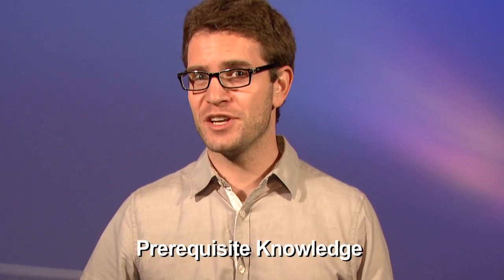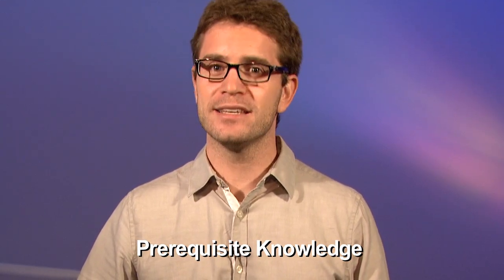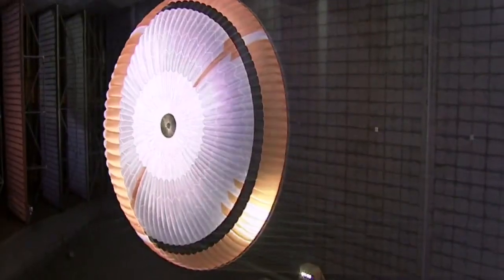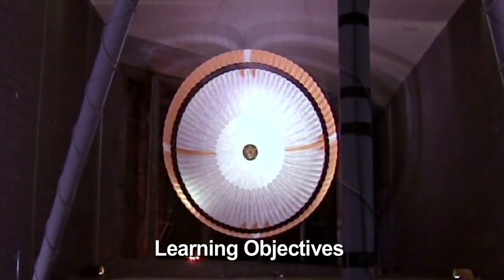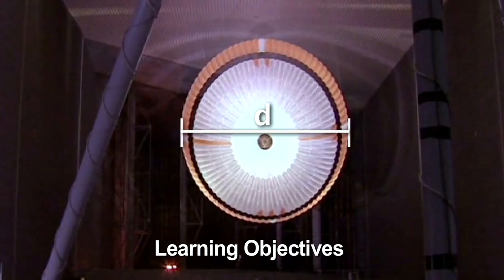Before watching this video, you should be familiar with unit analysis and understand the difference between dependent and independent variables. By the end of this video, you will be able to use dimensional analysis to estimate the size of a parachute canopy that can slow the rover down to 90 meters per second on its descent to Mars.